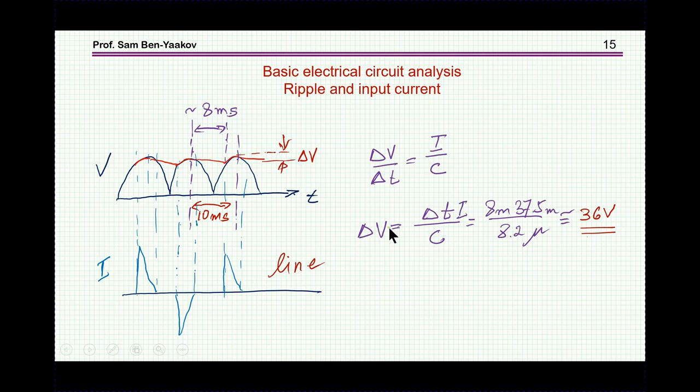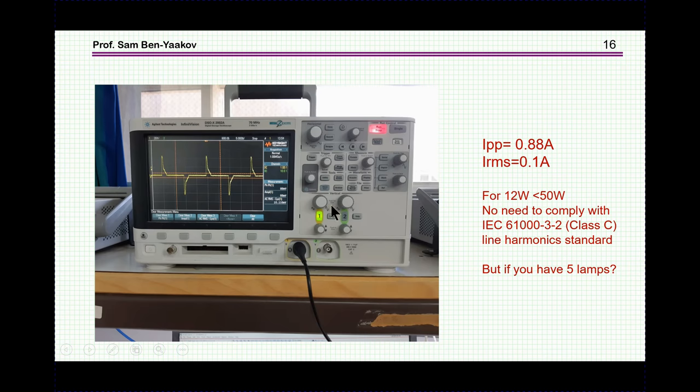Looking now at the real measurement, this is a measurement. We found that indeed the input current is fairly high. It's a peak to peak of 0.88 amps, so it's about 0.44 amp peak each side, fairly high for this 12 watt lamp. But since it's 12 watts, which is less than 50 watts, then it doesn't have to comply with the line harmonic standard. This is IEC 61000-3-2, and we are talking about Class C for lighting, which is starting at 50 watts, so we don't have to worry about that. But if we have say 5 lamps, it's already 60 watts, but the standard doesn't talk about many devices, it talks about one device, so from the point of view of the standard it is okay.